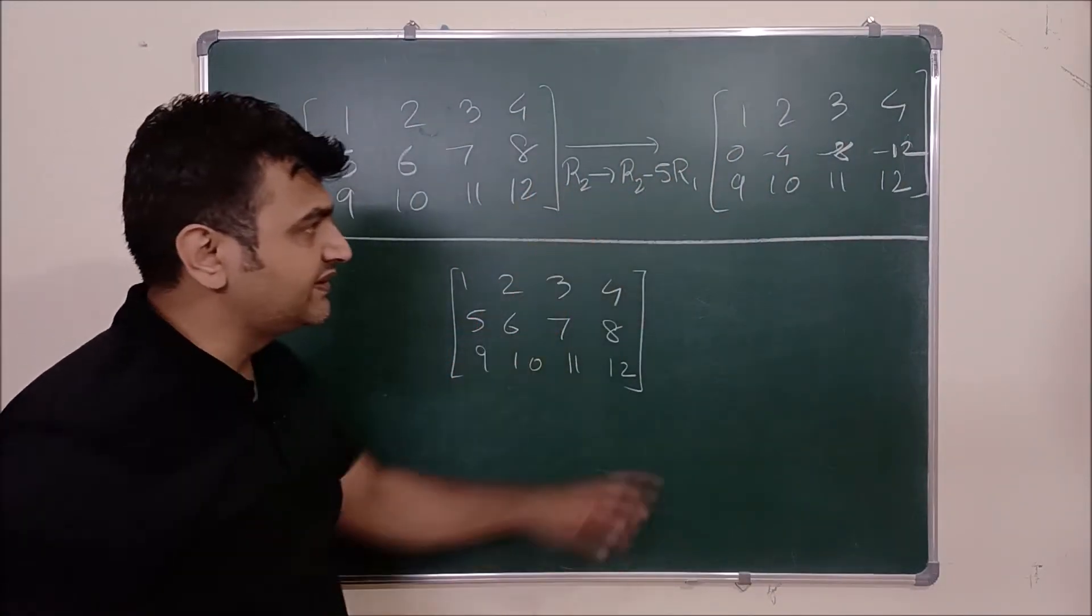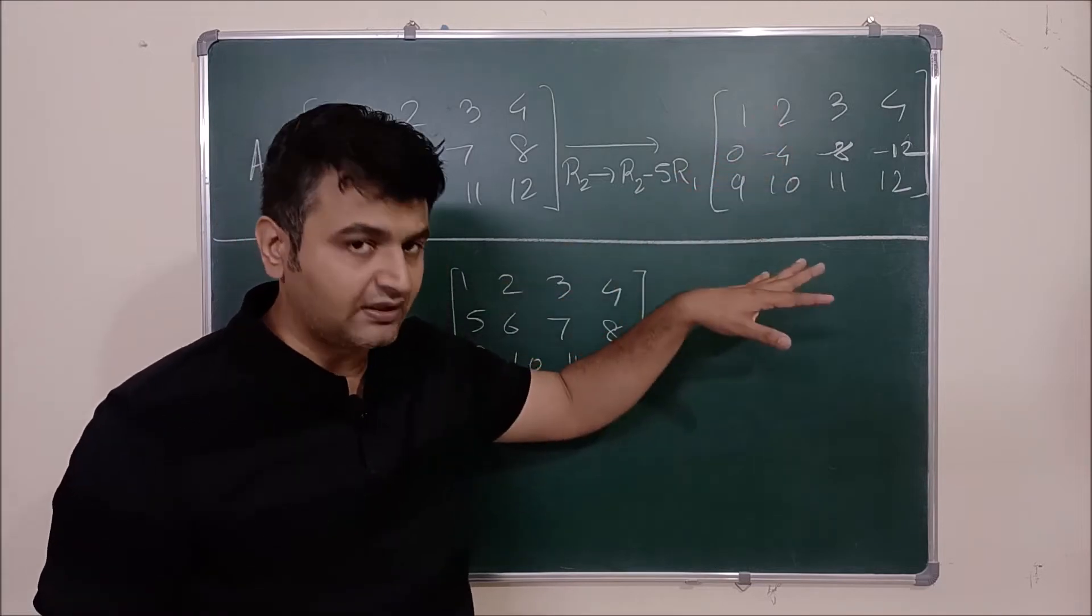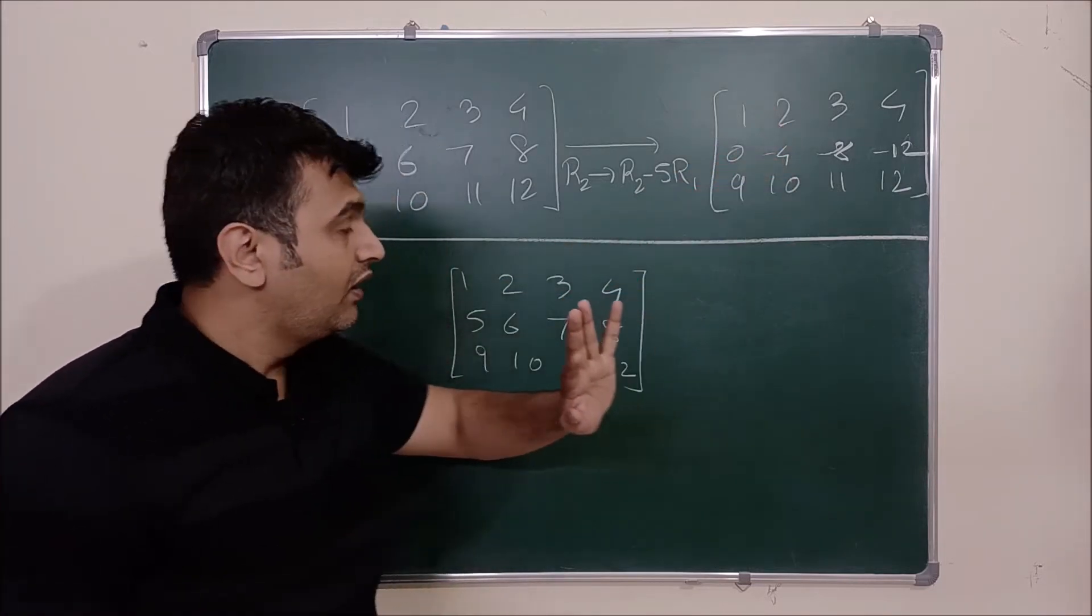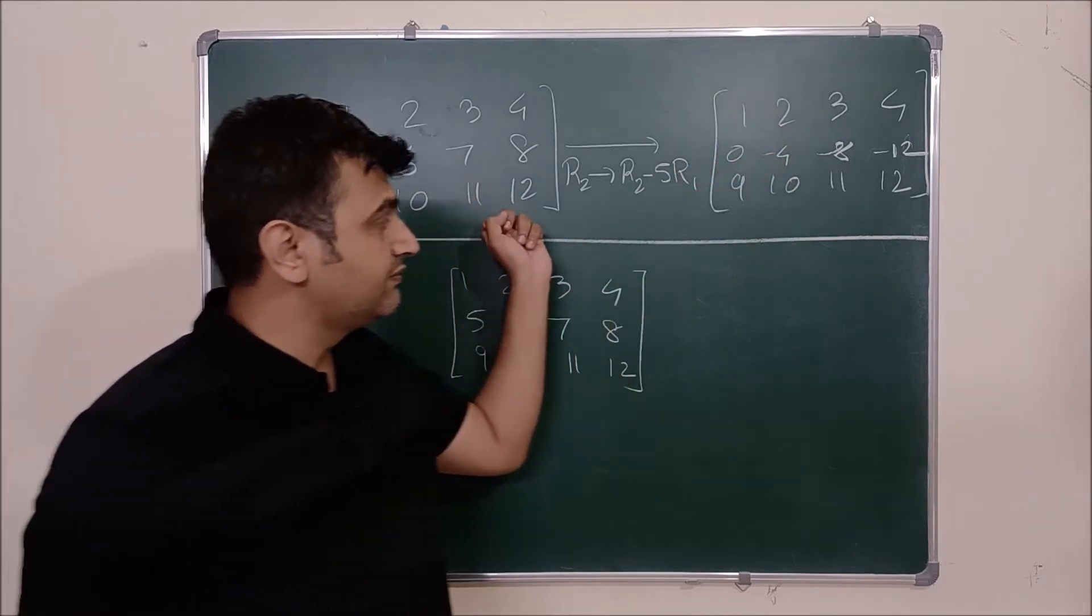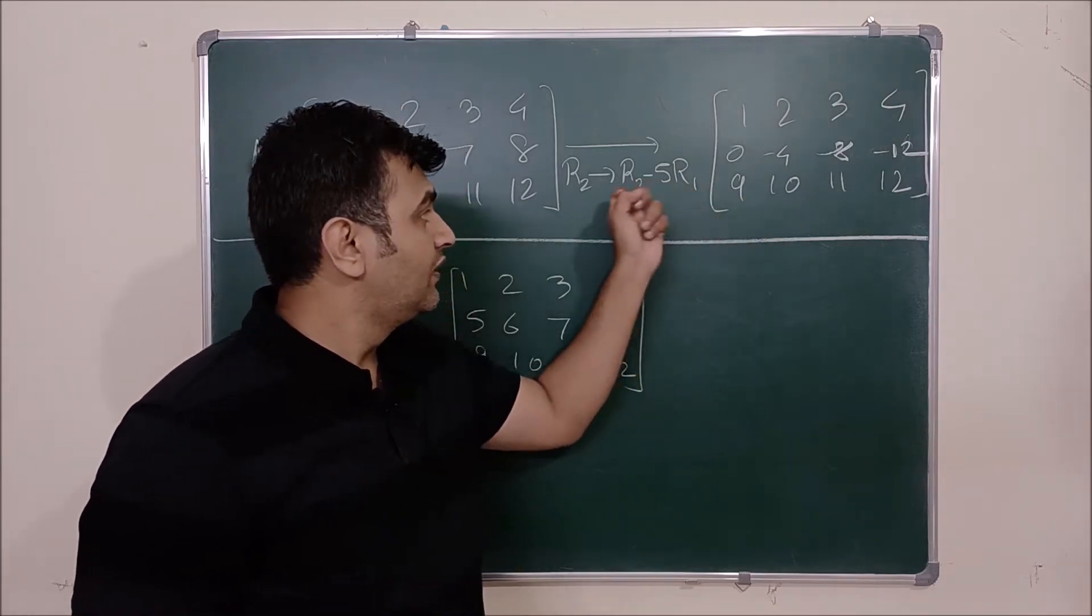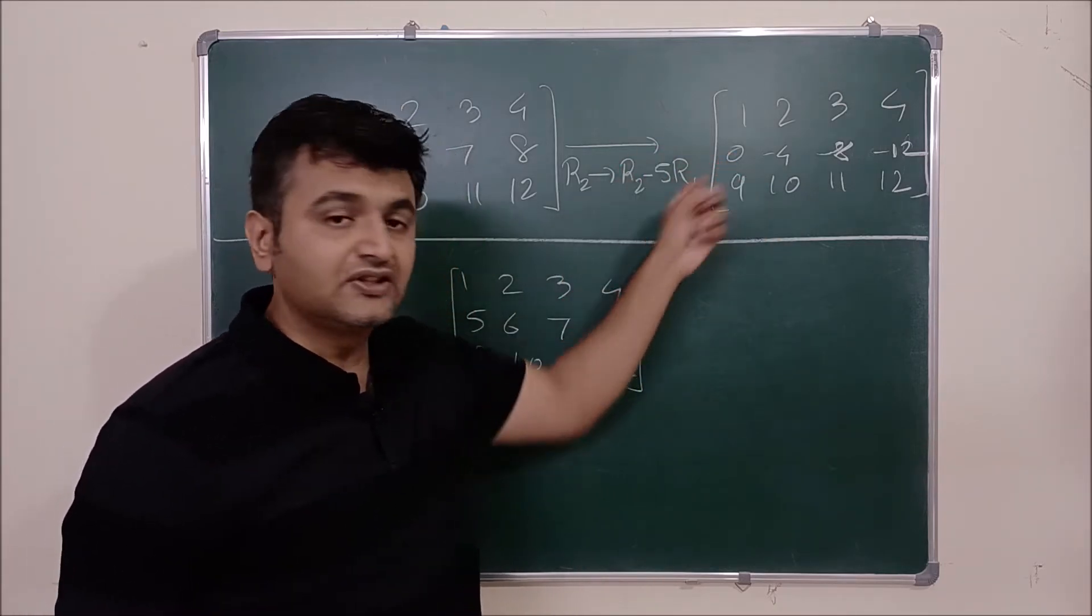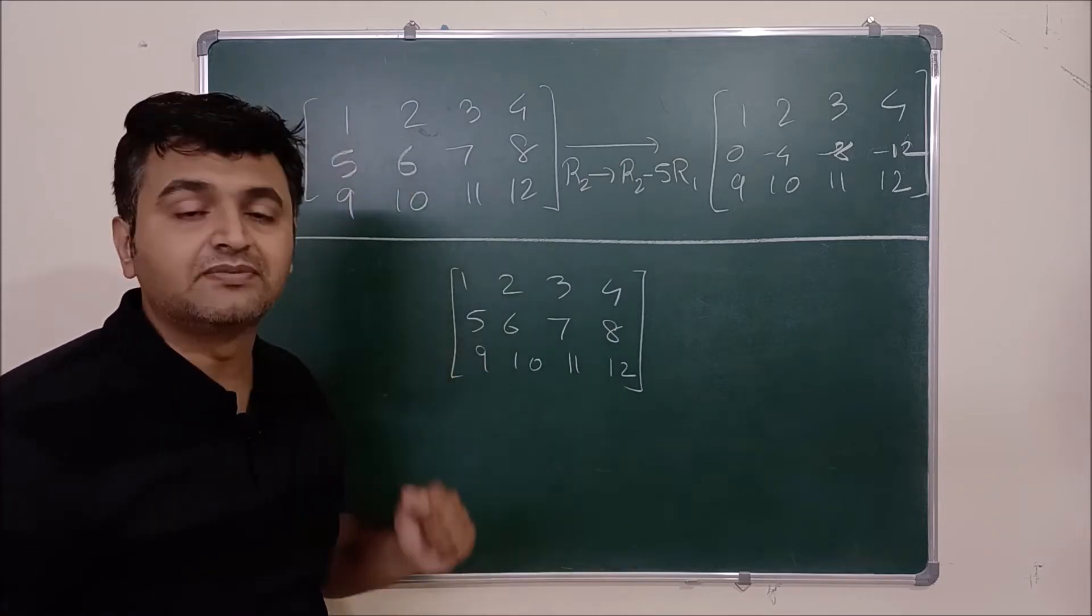And then you do other like if you want to make this 0 you do R3 minus 9 times R1. This is the next step. But how can I get this matrix to this matrix by applying this operations without doing this operation. How can I get via matrix multiplication?